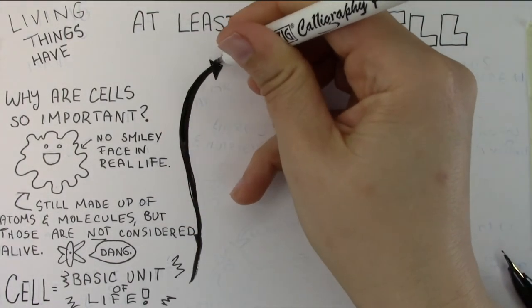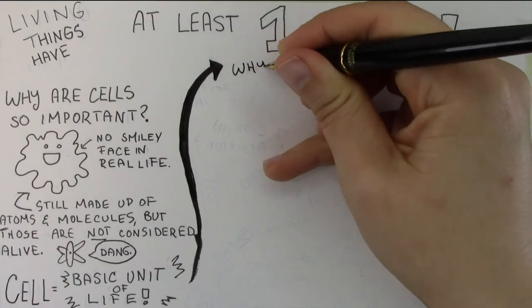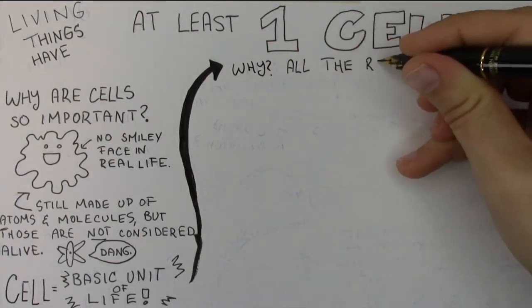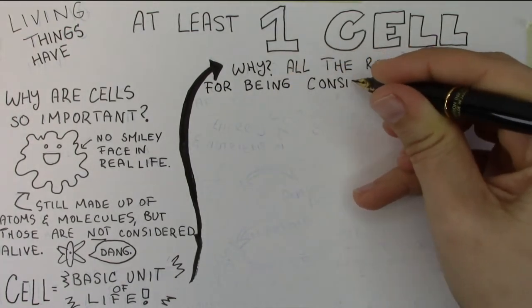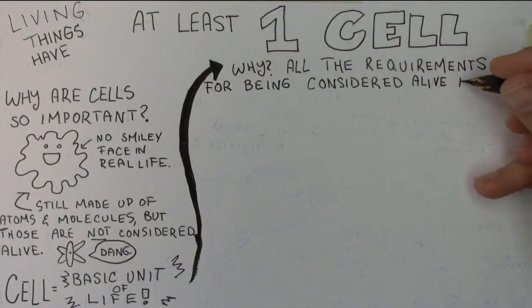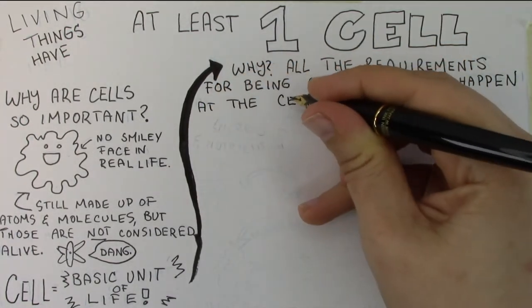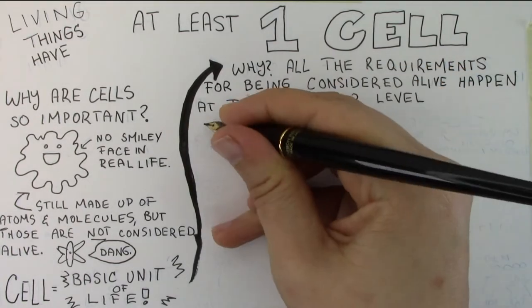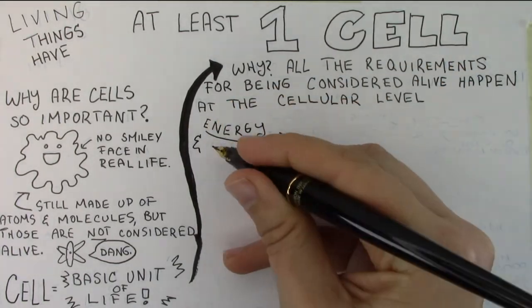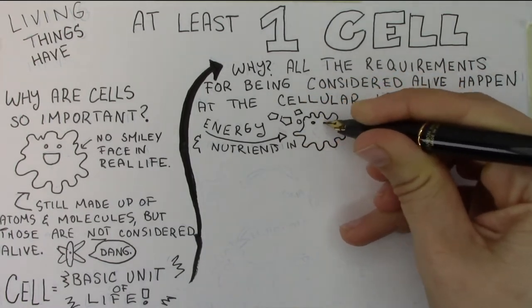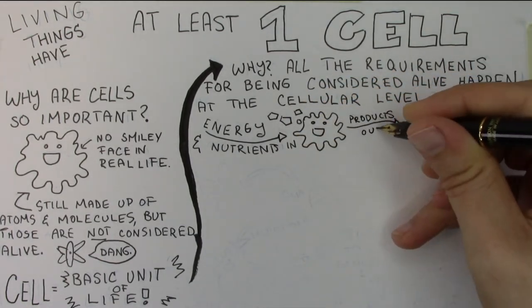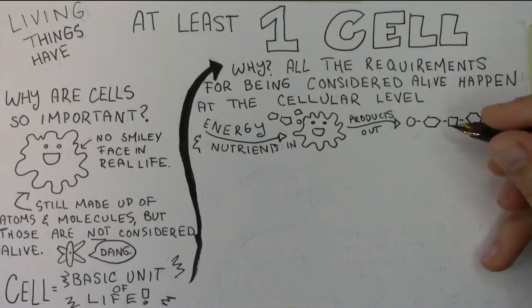So let's talk about what's so important about a cell. Throughout this video, I'm going to cover some of the important requirements to be considered alive, but it's important to remember that all of those requirements at some point happen at the cellular level. For instance, it's the cell that actually takes in energy and nutrients, in your case from your digestive system, and uses them to build the products that you need to make more of yourself and basically survive.